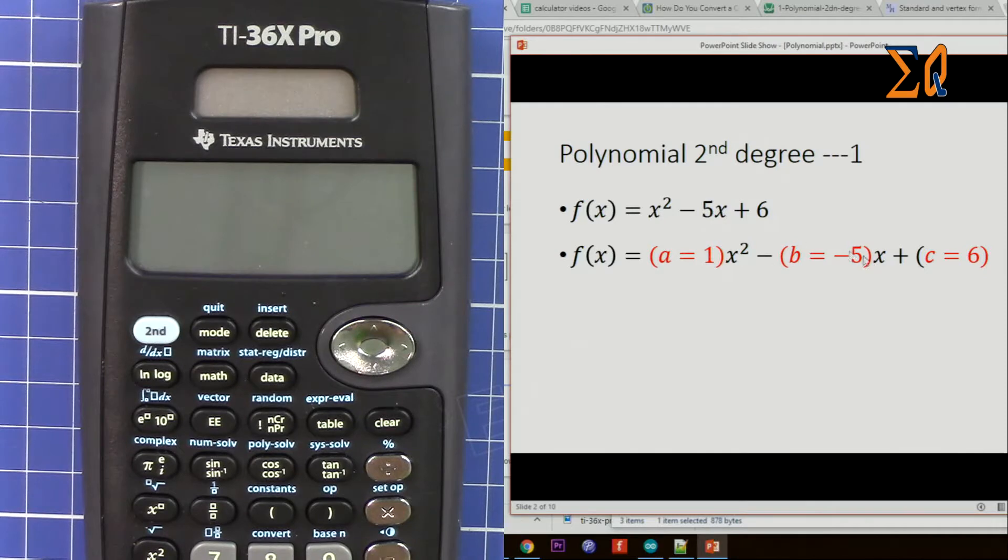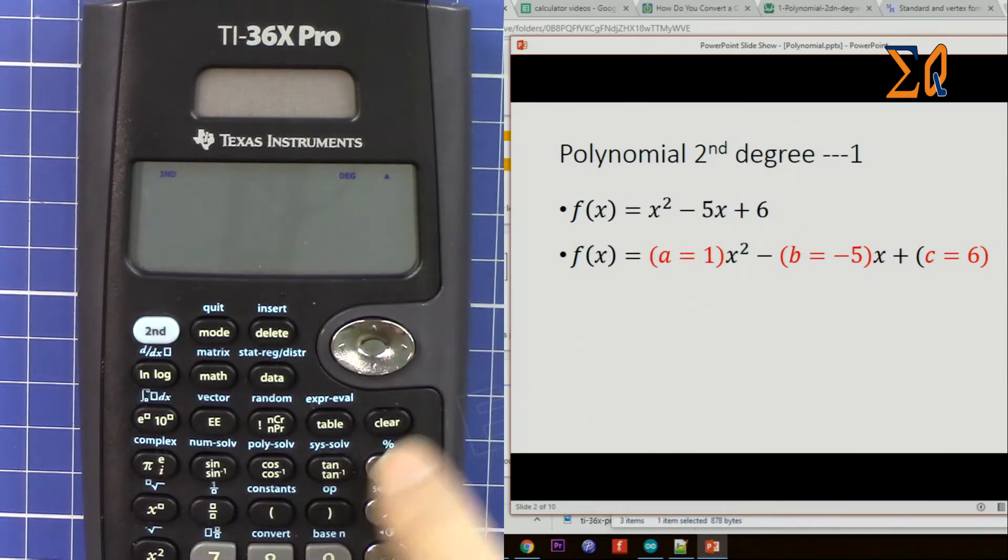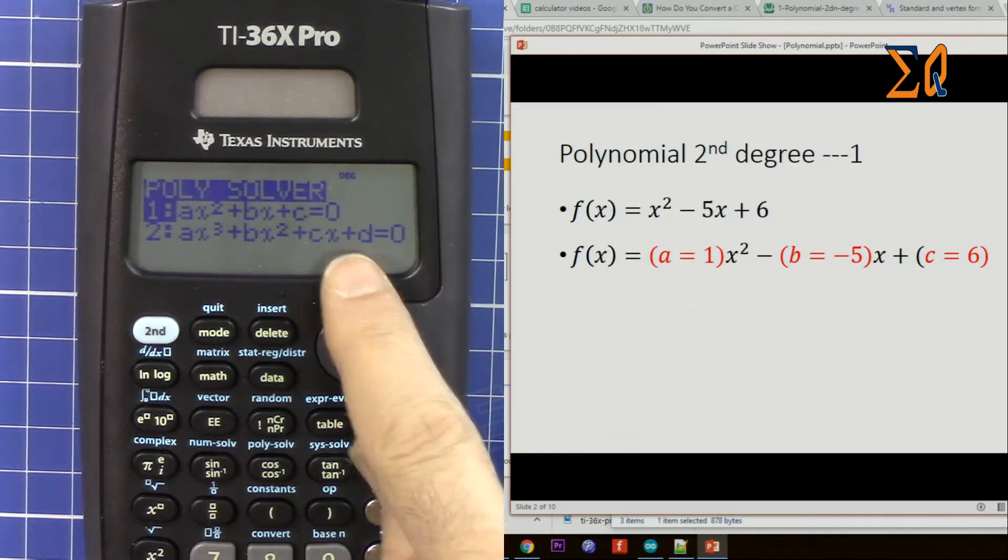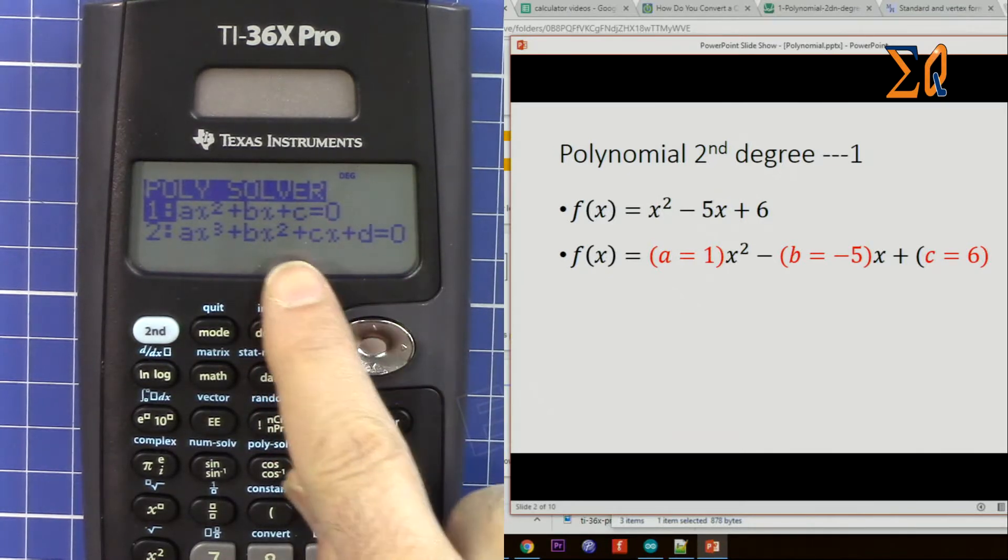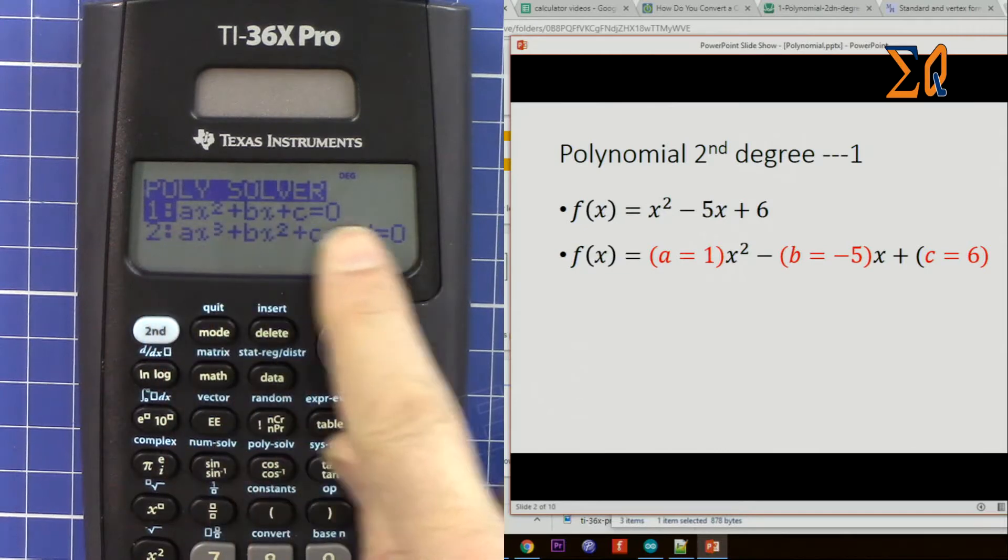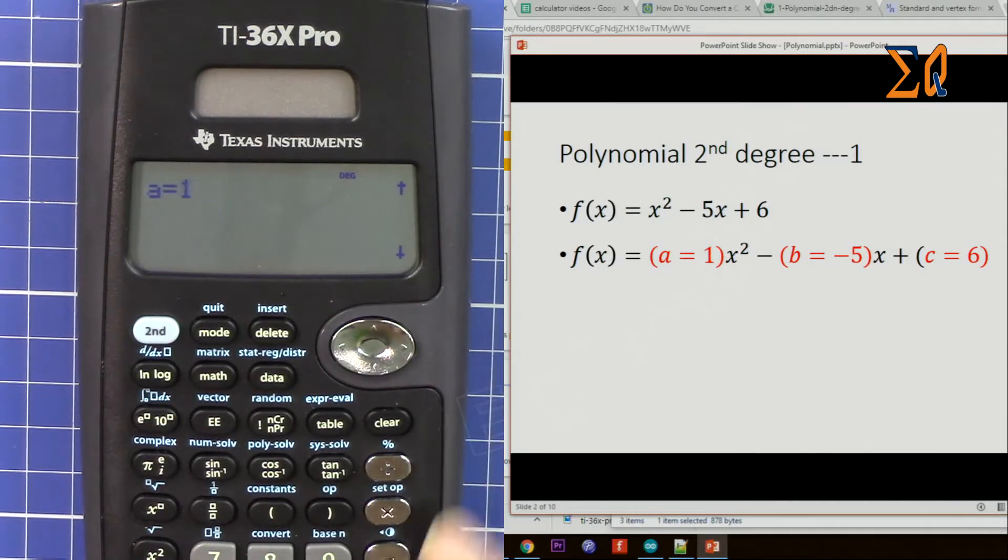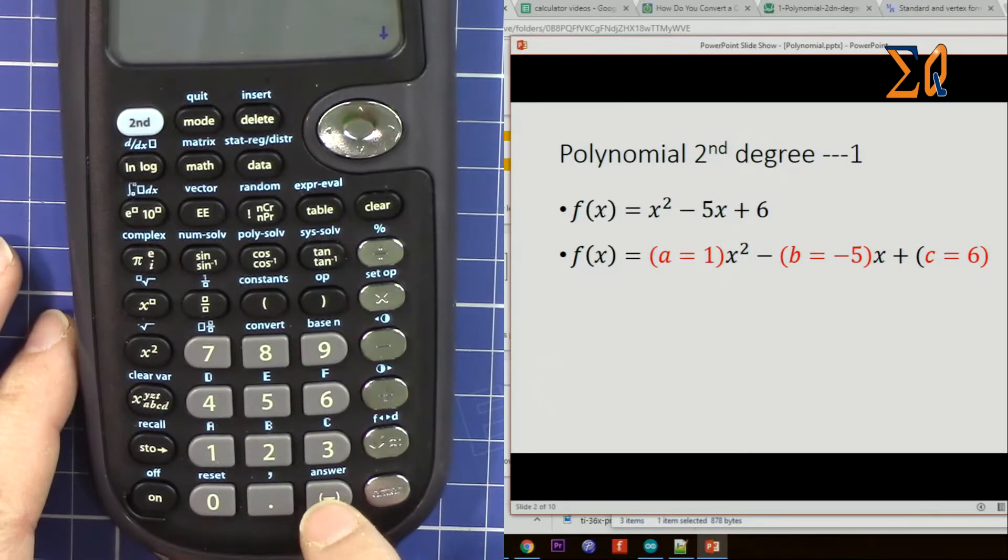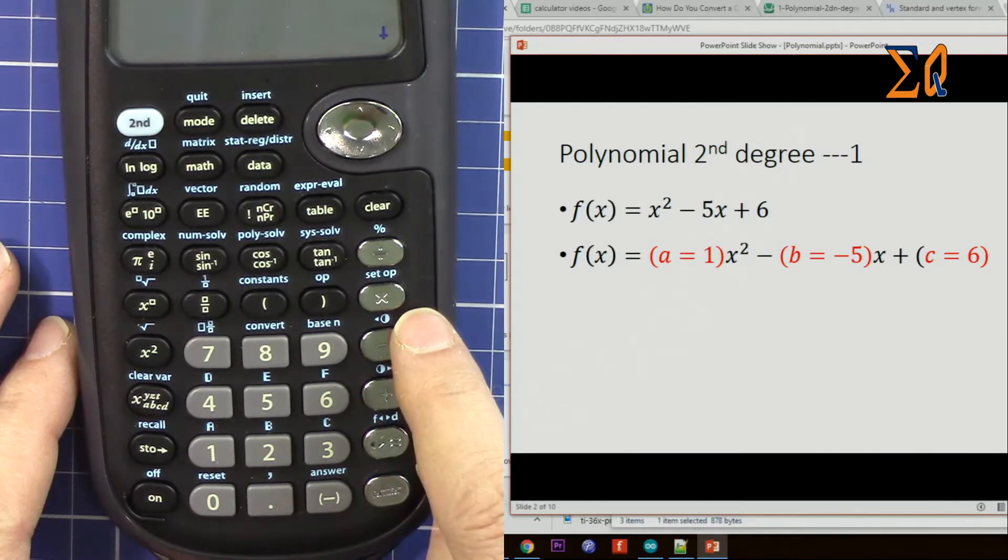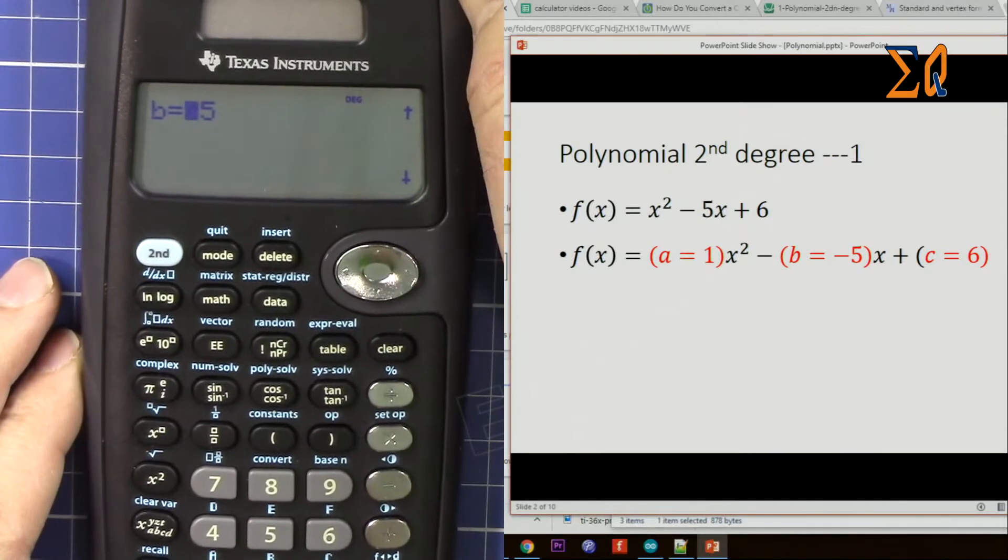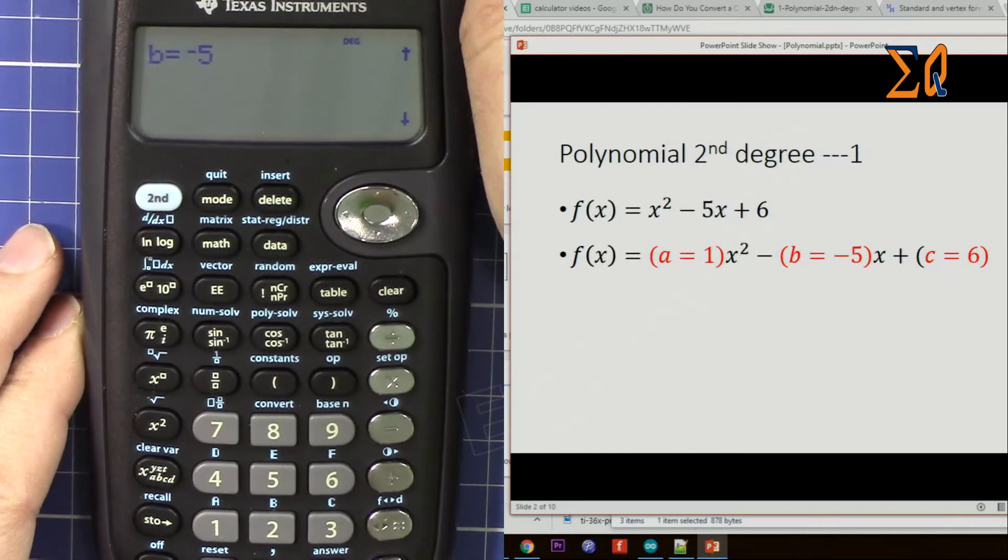So a is 1, b is -5, and then c is 6. Press plus, second function, and poly. Here we have two options. For ax² + bx, for polynomial second degree, we press 1. Now a is 1, and then equal sign. And then for minus, press this minus, not this one—you will get error. So -5, and then equal sign, and then 6, equal sign.